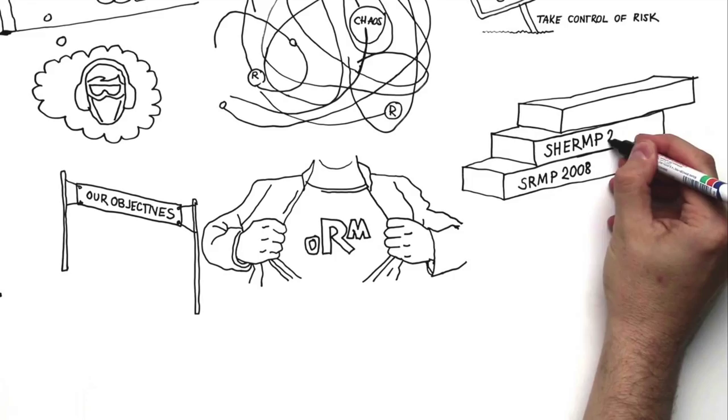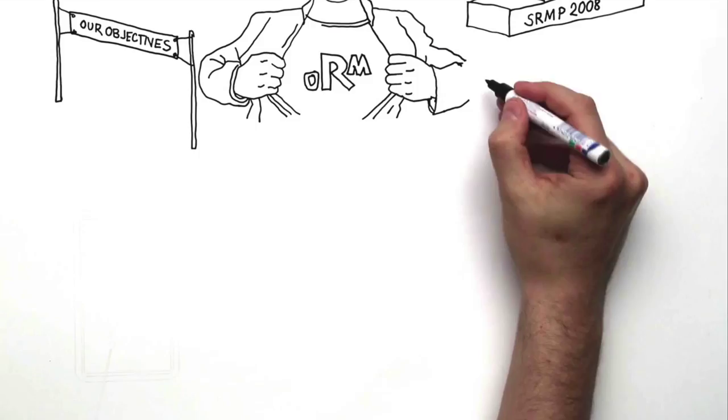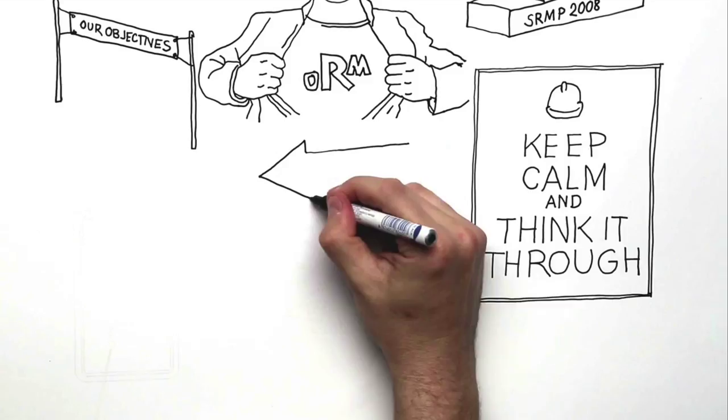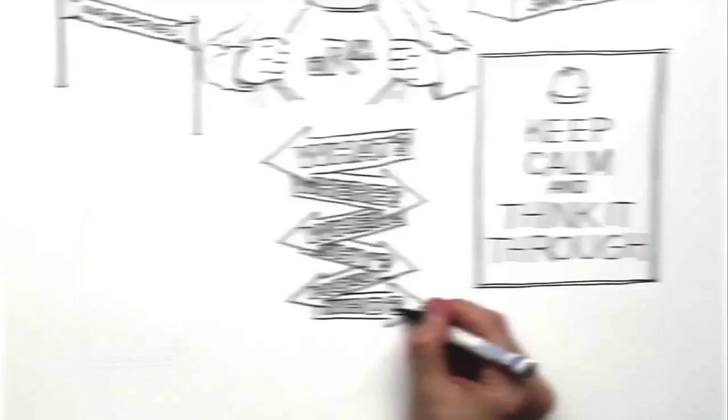Operational risk management is a framework for thinking through your situation. When you use operational risk management correctly, you develop different habits. You ask yourself the kinds of questions that help you make the best decisions. You apply it to all site activities.